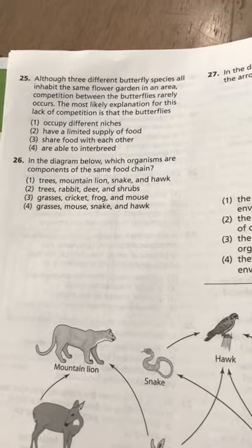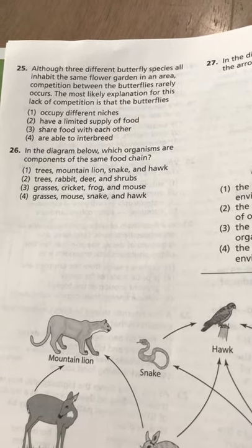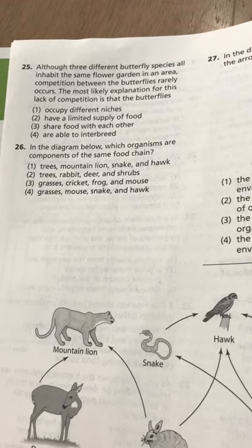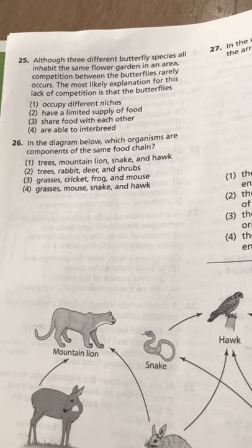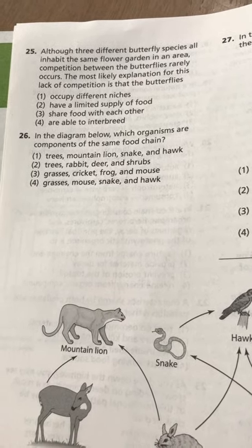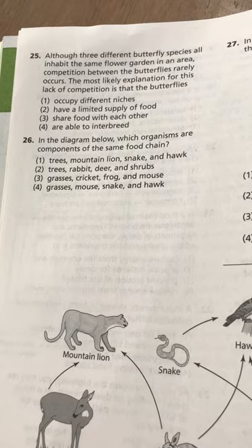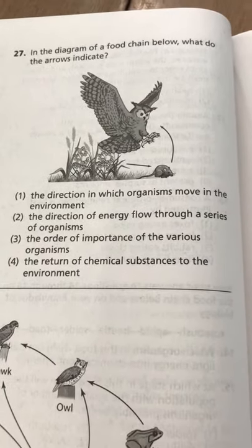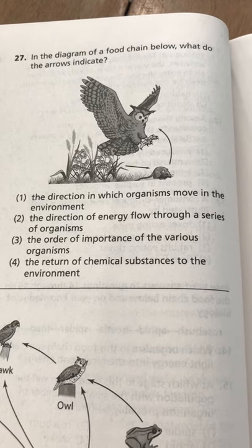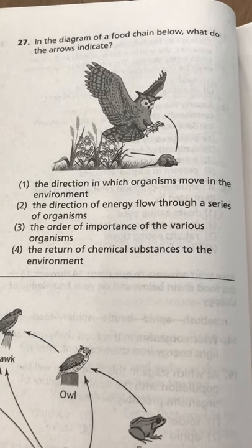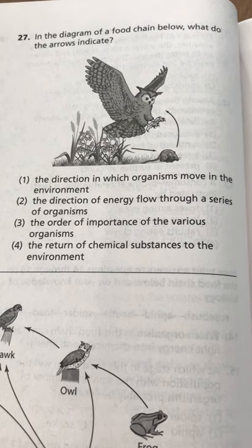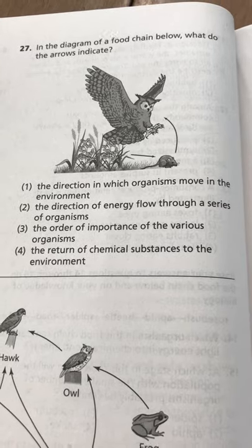Number 26: In the diagram below, which organisms are components of the same food chain — trees, mountain lions, snake, and hawk; trees, rabbit, deer, and shrubs; grasses, cricket, frog, and mouse; or grasses, mouse, snake, and hawk? Number 27: In the diagram of the food chain below, what do the arrows indicate — the direction in which organisms move in the environment; the direction of energy flow through a series of organisms; the order of importance of the various organisms; or the return of chemical substances to the environment.